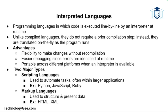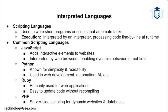Interpreted languages are programming languages in which the code is executed line by line by an interpreter at runtime, rather than being compiled ahead of time. There are two major types of interpreted languages: scripting languages and markup languages. Scripting languages are used to write short programs or scripts that automate tasks. They are interpreted by an interpreter, meaning the code is processed one line at a time during runtime.